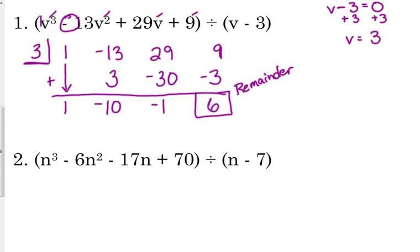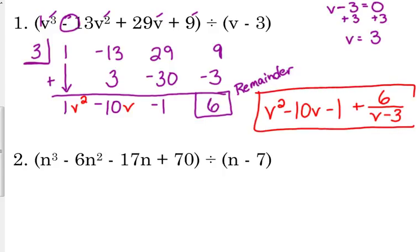So here's what our answer looks like. Our original polynomial was v cubed. So our answer is going to start with one less degree. That's going to be v squared, v, and then a constant. So here's our answer. v squared minus 10v minus 1. The 6 was positive, so it's plus 6 over what we divided by. That is our answer.